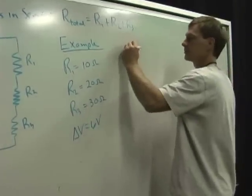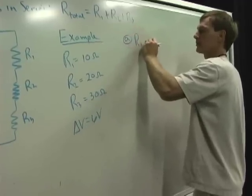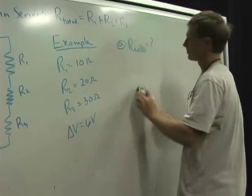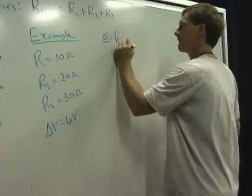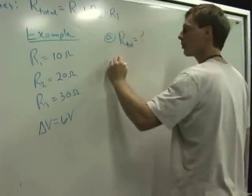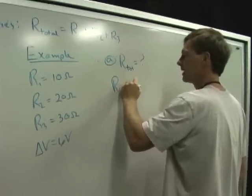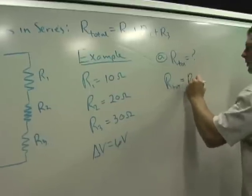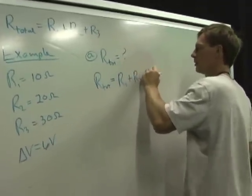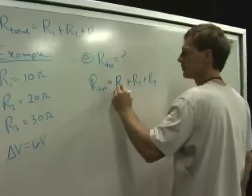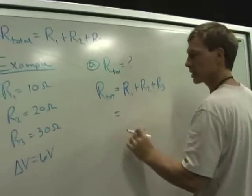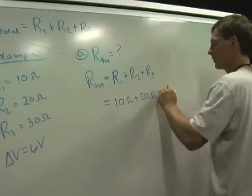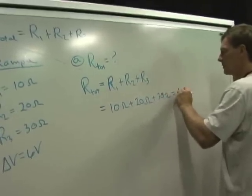So first off, what's the total resistance? I'll call it R-tote. Well, the total resistance is the sum of each of these, because the electrons all have to move through all of them, and it affects the flow. So it's R1 plus R2 plus R3. So there's my working equation. Now I just plug it in.